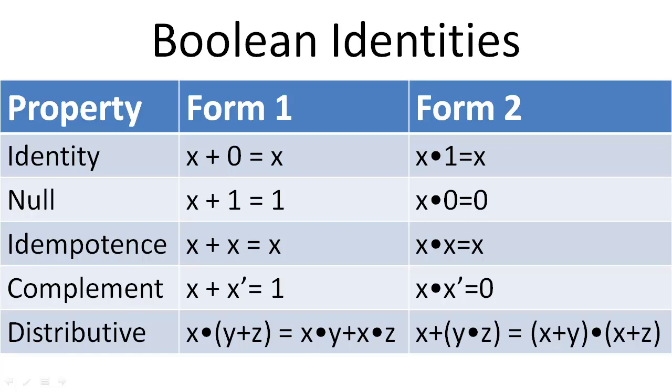Remember, a minimal form of a Boolean expression is one that implements the expression with the fewest number of product terms and then the fewest number of literals.